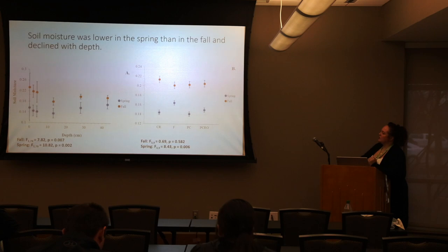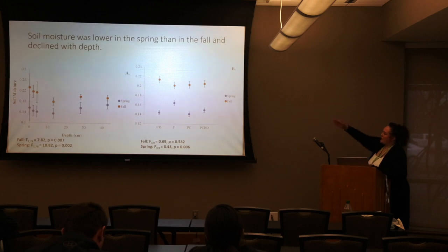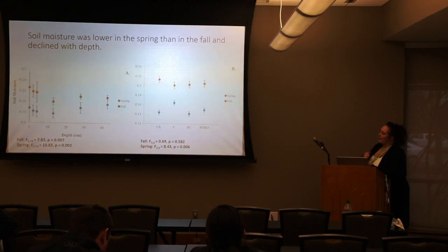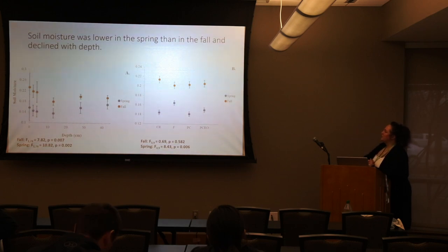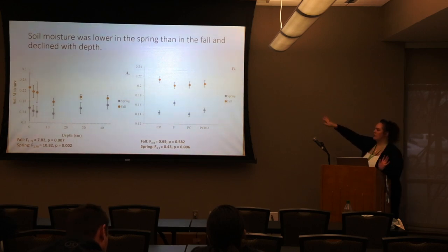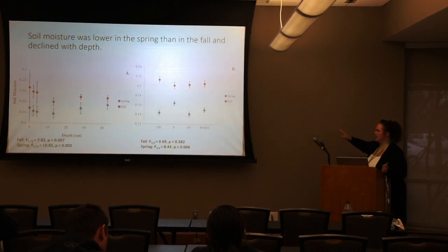Looking at moisture across depth — fall sampling in orange, spring in blue — we saw that in the fall we had much higher soil moisture than in the spring. At the soil surface is where most moisture is, and that declines with depth. For the different cover crops in the fall, since all plots had soybeans planted, there was no significant difference in soil moisture between any of the plots, which is what we would expect.